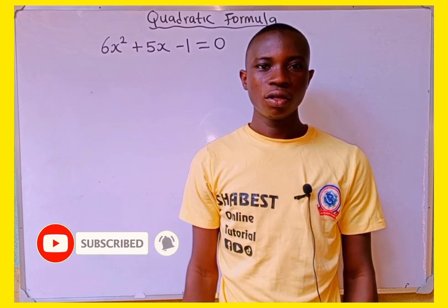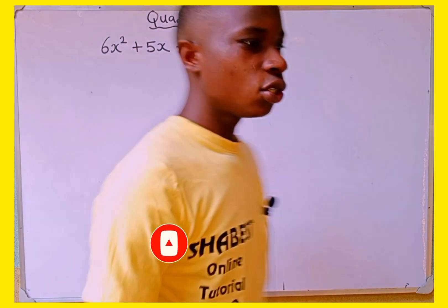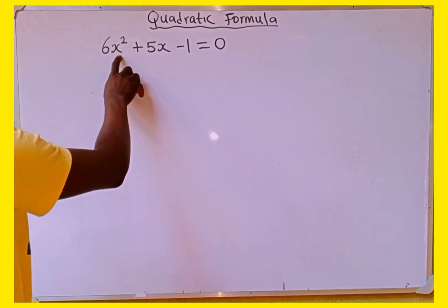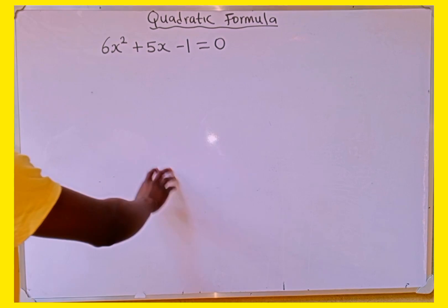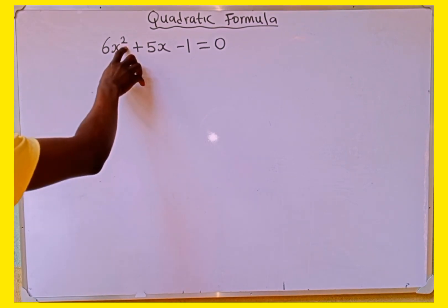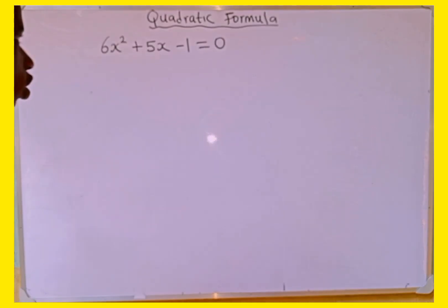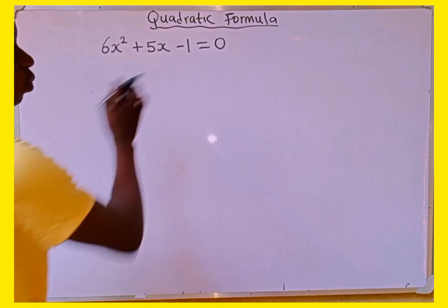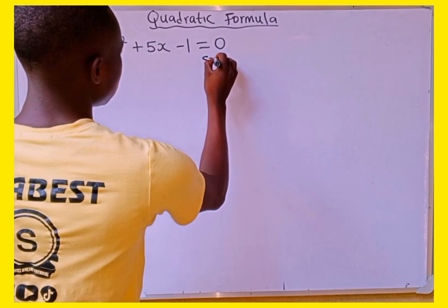The given equation is a quadratic equation: 6x squared plus 5x minus 1. The highest power of x is 2 and it is equal to 0, so this is a quadratic equation. We're going to use the formula method to get the root of this equation. Let's get started with the solution.